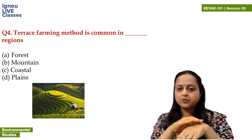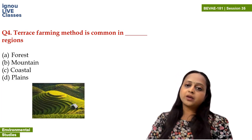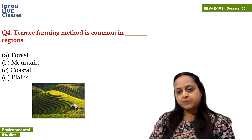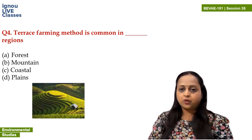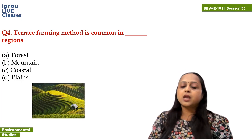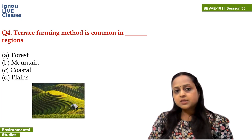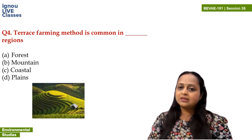Terrace farming is a way to control the speed of water in order to protect the soil from soil erosion, and this method is adopted and is common basically in mountains and hilly areas. If we talk about forest — terrace farming is not done in forests; farming is not generally done in forests. Forests are natural. Coastal areas — no. Plains — no. So the answer is mountains.